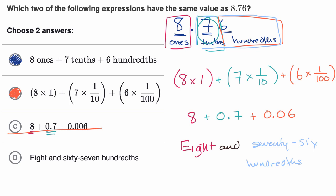But what they wrote over here, they did write eight, but instead of 76 hundredths, they wrote eight and 67 hundredths. A little tricky. So we would rule that one out as well.